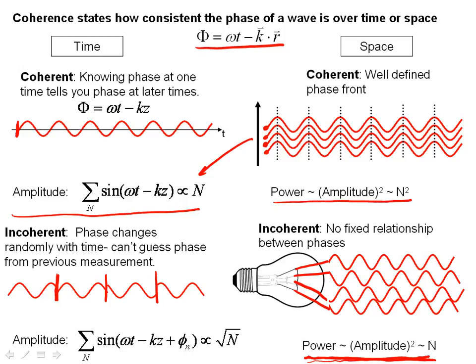And so in fact, let me run through this one more time and get a different color of ink and erase all my lines, because this is an important point and I want to bring it home a little bit. For coherent waves, the amplitude sums as the number of waves, the power sums as the number of waves squared.